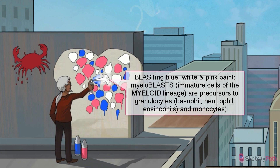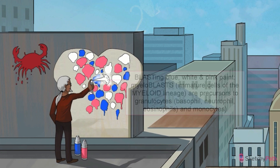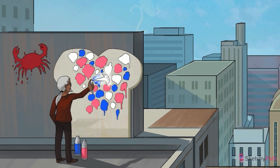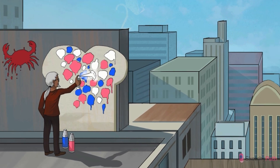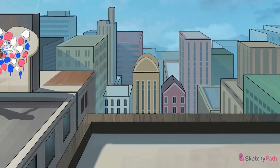Because AML specifically involves myeloblasts, which are precursors to granulocytes, we've made the splotches blue, white, and pink to remind you that we're dealing with a basophil, neutrophil, and eosinophil progenitor cell. This disease progresses rapidly, which is why it's called acute.